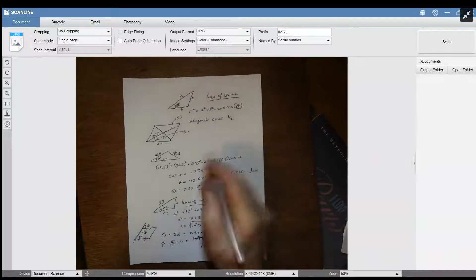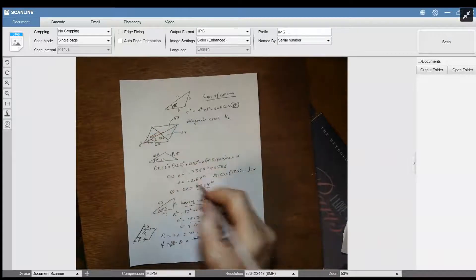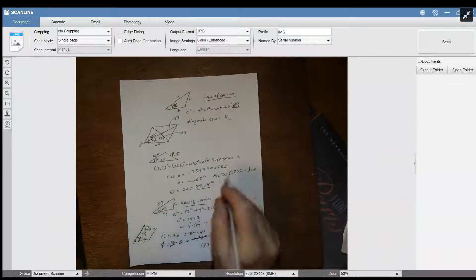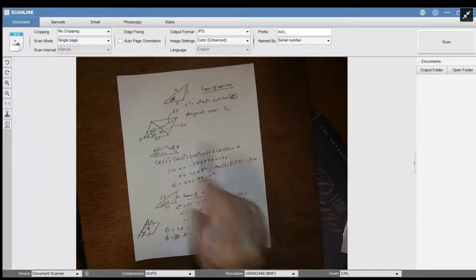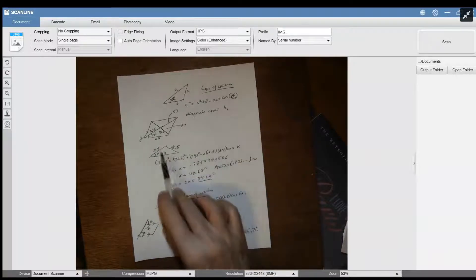So theta, which is this whole angle they're talking about up here, is 2 times alpha, which is 84 point something. So you know what theta is - you calculated that using the law of cosines to find that one.